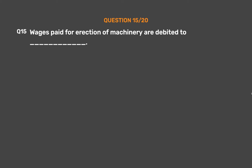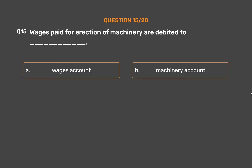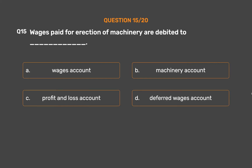Question number fifteen: wages paid for erection of machinery are debited to — Option A: wages account. Option B: machinery account. Option C: profit and loss account. Option D: deferred wages account.